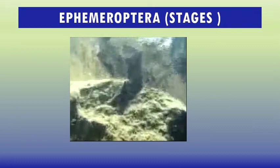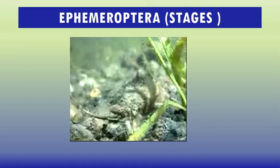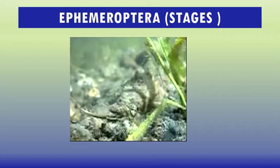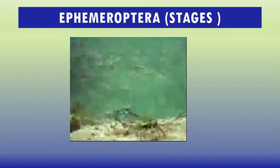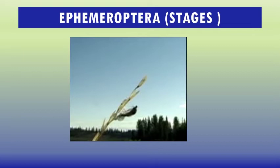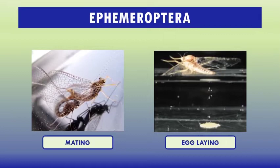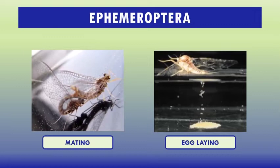They spend several years underwater, living near vegetation. The emerging adult is sexually immature — just one more molt is required. This final molt prepares them for mating. You can see on the left side the mating process, and on the right side the procedure of egg laying.